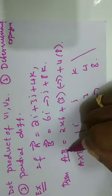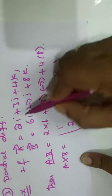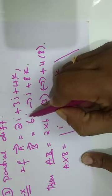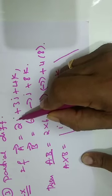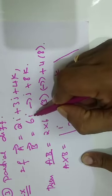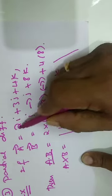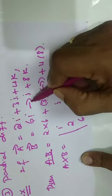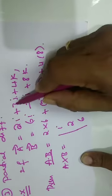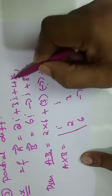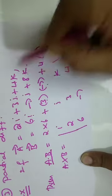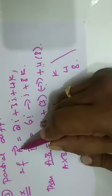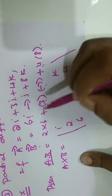The dot product a · b is computed by multiplying the corresponding coefficients. The coefficient of i in a is 2 and in b is 6, so 2 × 6. The coefficient of j is 3 and -7, so 3 × (-7). The coefficient of k is 4 and 8, so 4 × 8. This gives us the dot product between a and b.